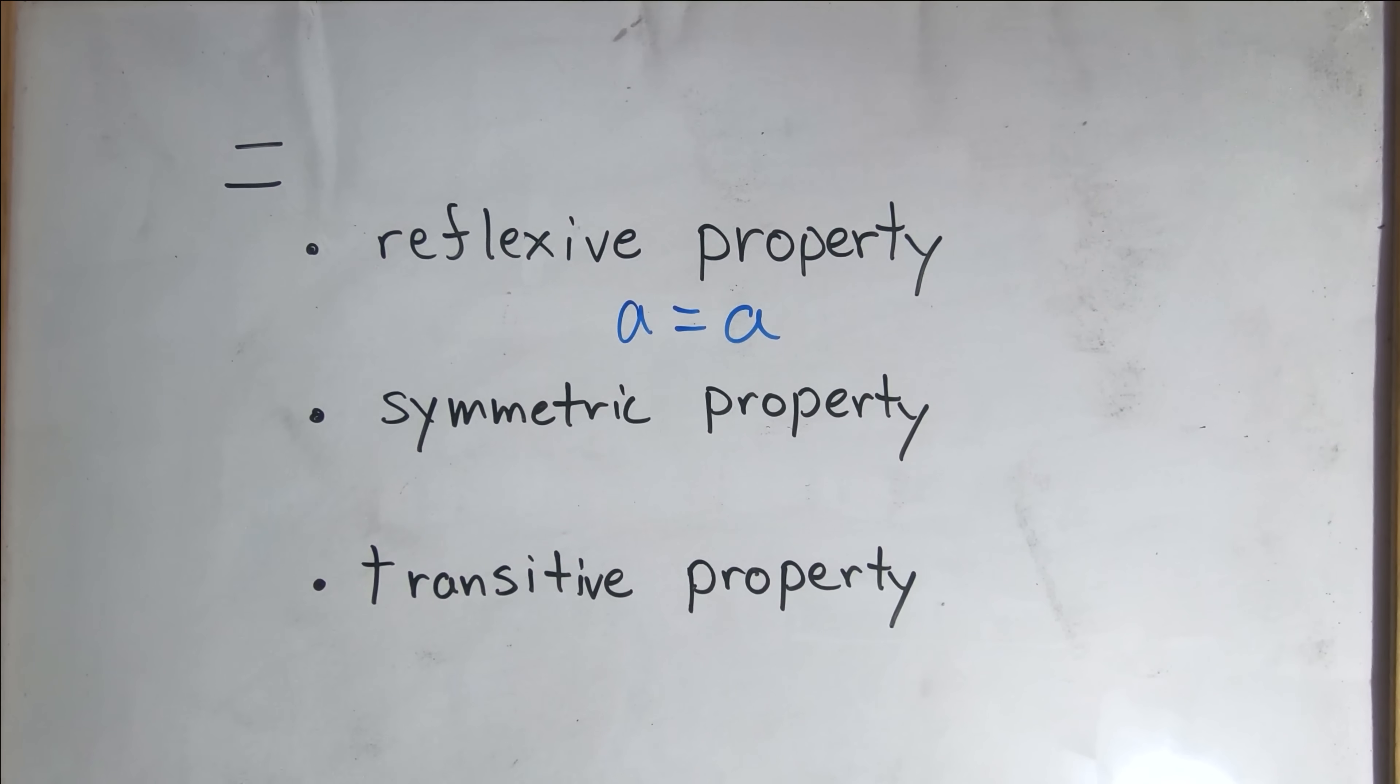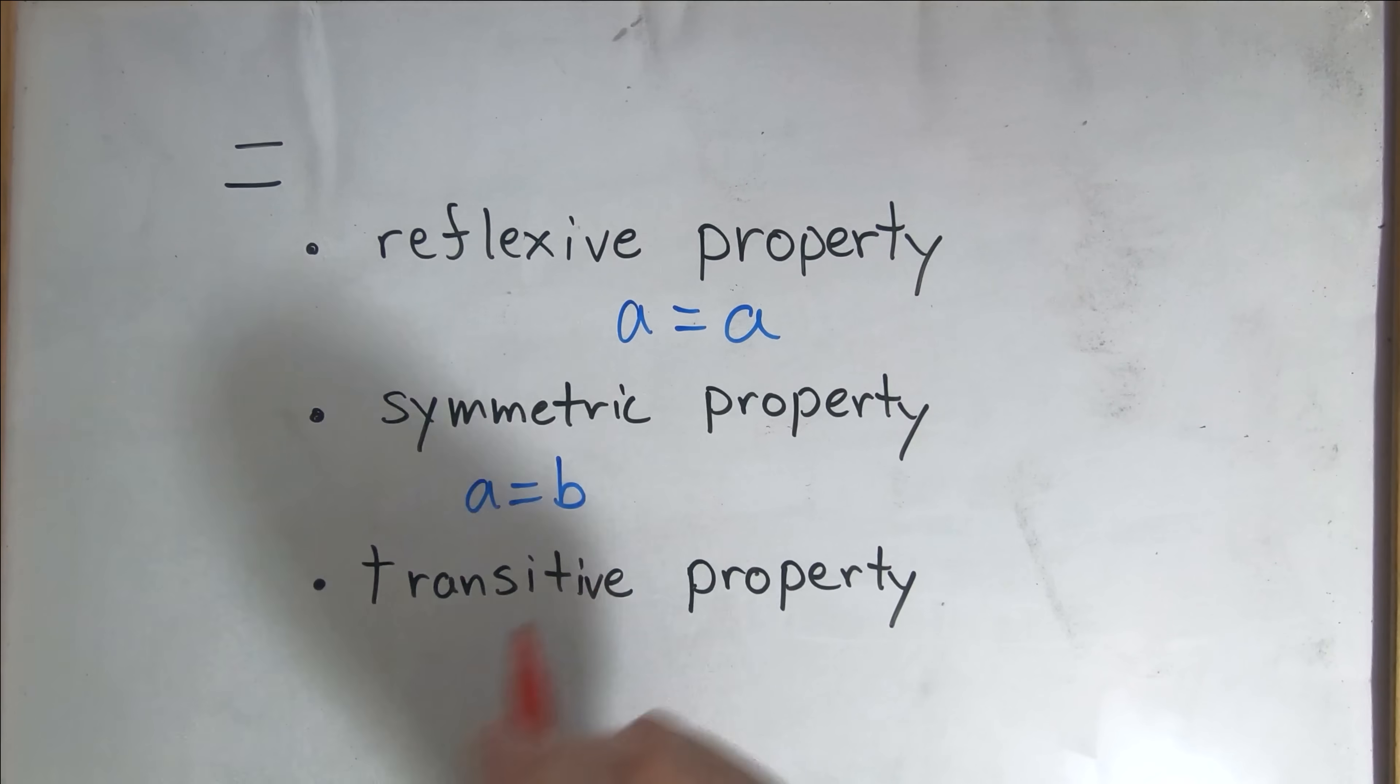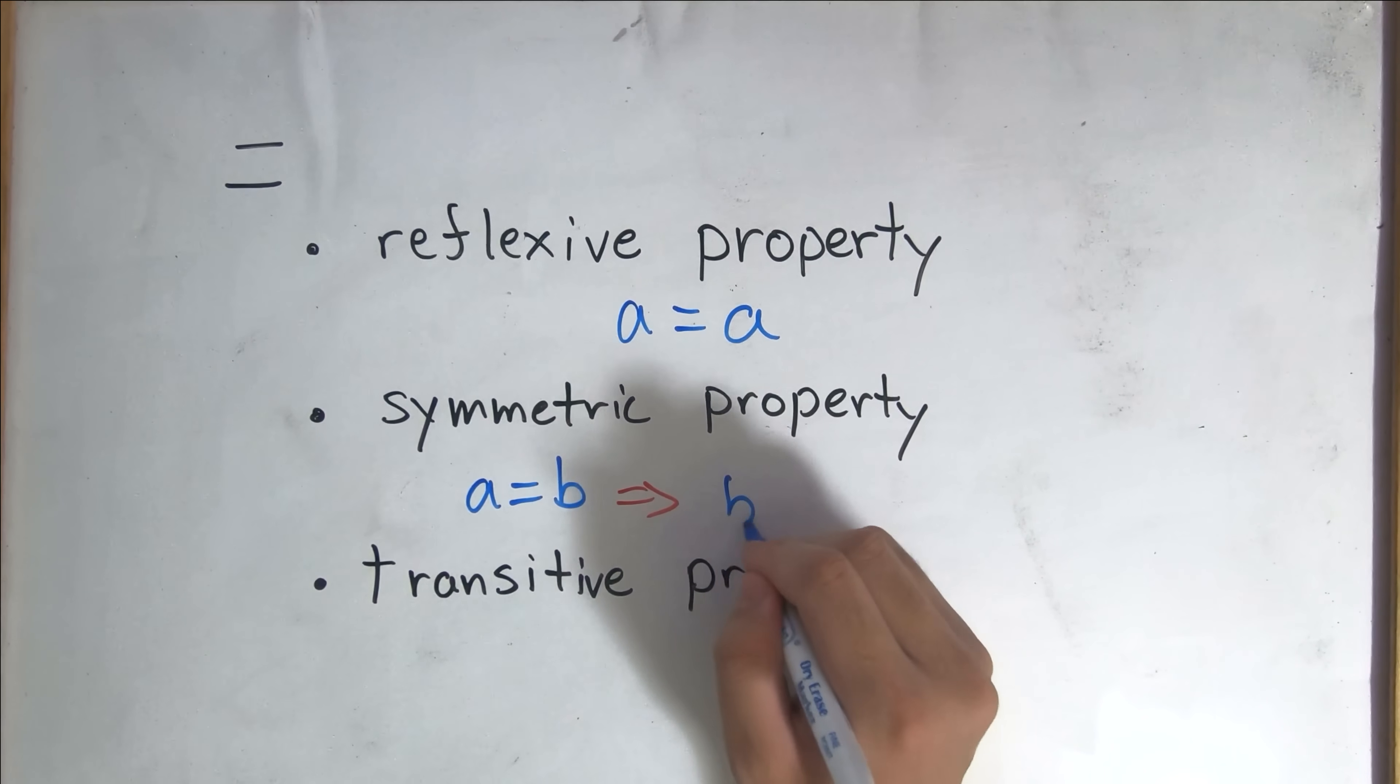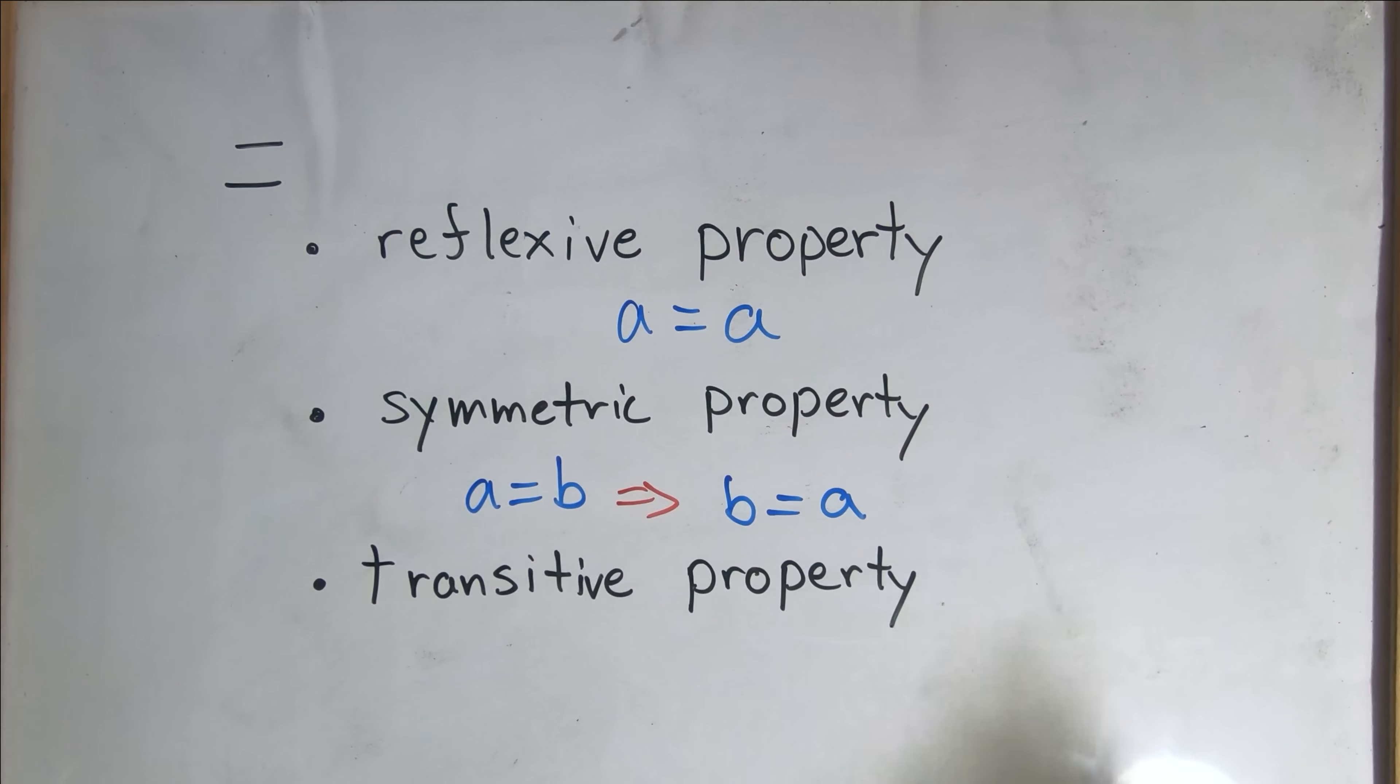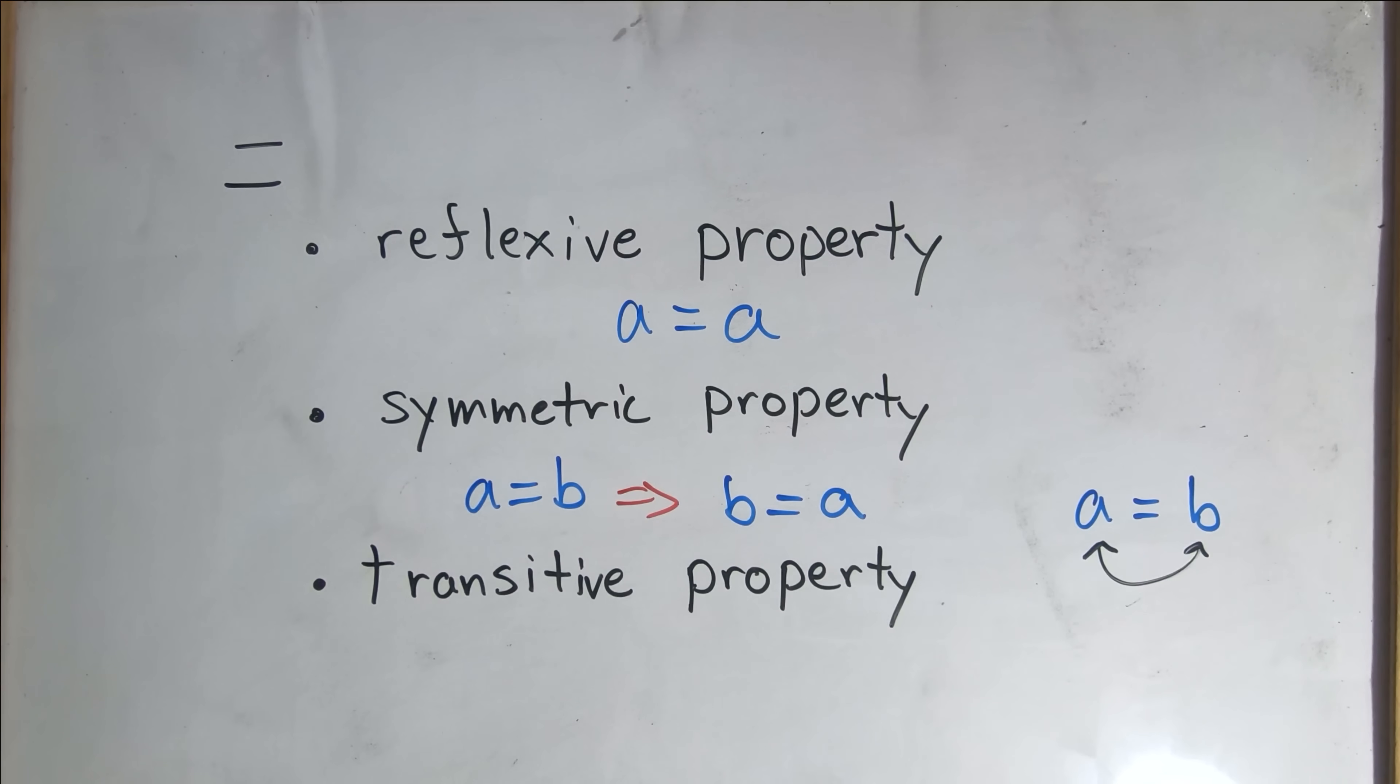Next, we have the symmetric property. For any two quantities a and b, if a equals b, then we have that b equals a. Imagine some equation a equals b. Flipping a and b still maintains the equality of this equation. Finally, we have the transitive property. For any quantities a, b, and c, if a equals b, and b equals c, then a equals c.